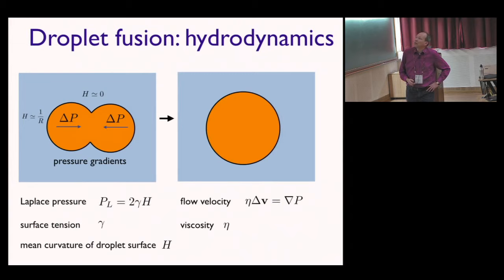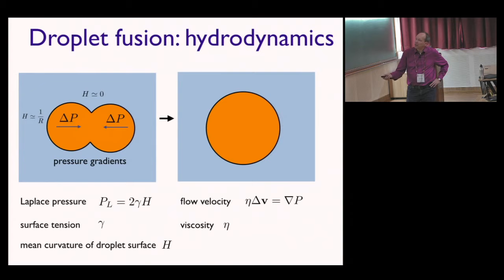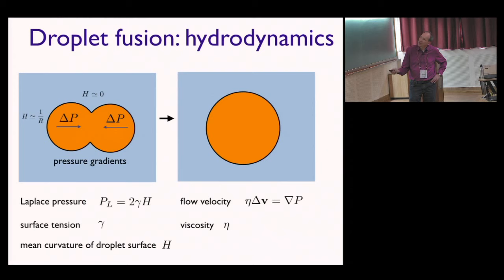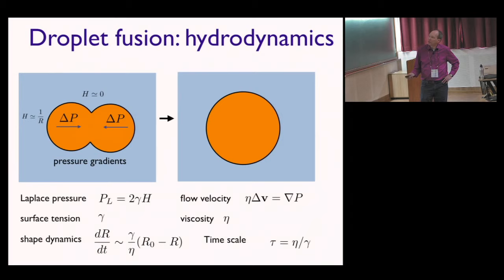Regarding droplet fusion: if a droplet has a surface tension, there is a pressure difference between inside and outside — the Laplace pressure ΔP = 2γH, where H is the curvature and γ is the surface tension. This pressure is higher for higher curvature. When two droplets are brought together, hydrodynamic flows drive them to a spherical shape. The relaxation process occurs on a characteristic timescale given by the ratio of viscosity to surface tension.